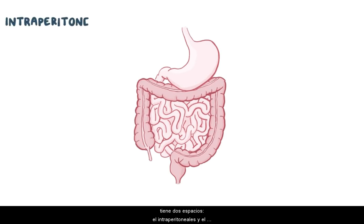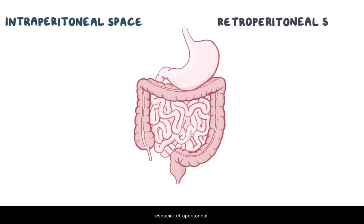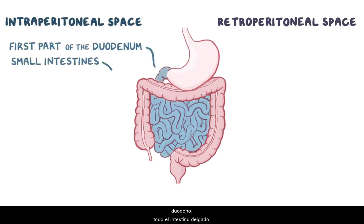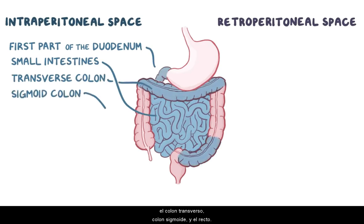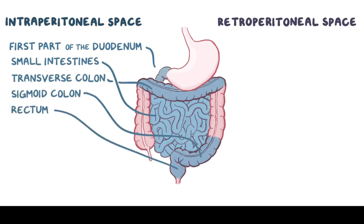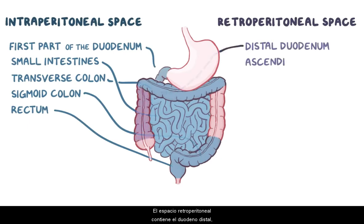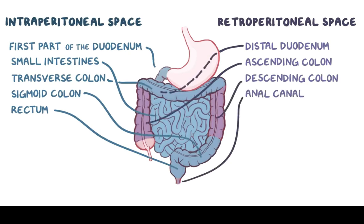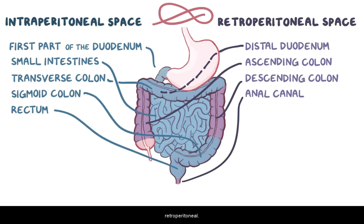The large intestine is found in the abdominal cavity, which can be thought of as having two spaces: the intraperitoneal space and the retroperitoneal space. The intraperitoneal space contains the first part of the duodenum, all of the small intestines, the transverse colon, sigmoid colon, and the rectum. The retroperitoneal space contains the distal duodenum, ascending colon, descending colon, and anal canal. So the large intestines essentially weave back and forth between the intraperitoneal and retroperitoneal spaces.